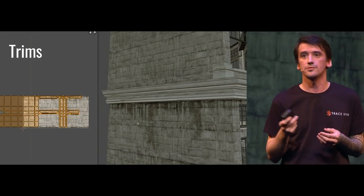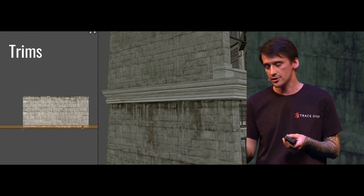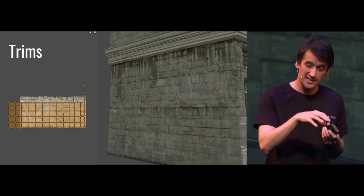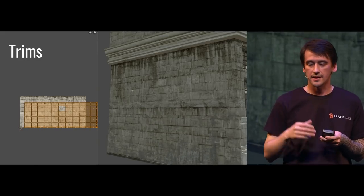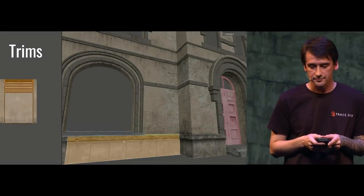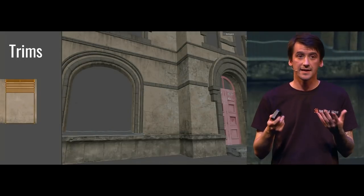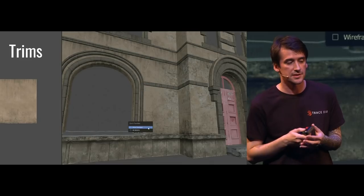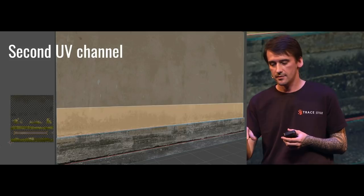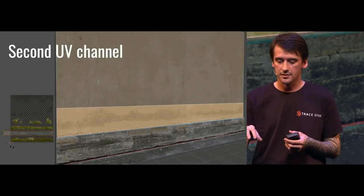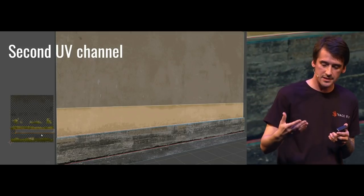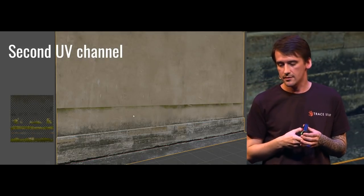It would also be beneficial to include other elements into your trim texture — into the same texture space. Like unique elements, uniquely baked, uniquely textured. And also elements like decals that you can mix using a second UV channel. As you can see, I am mapping decals into the material, and with that I can achieve visual richness.